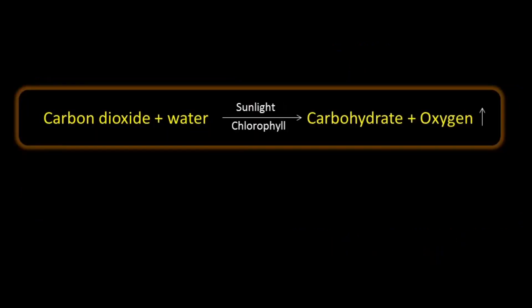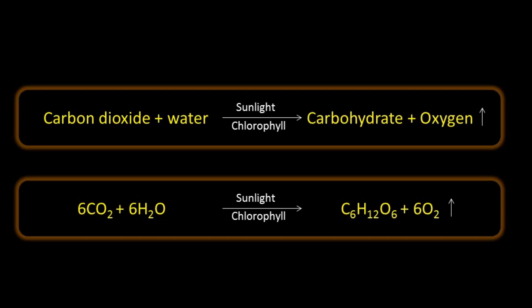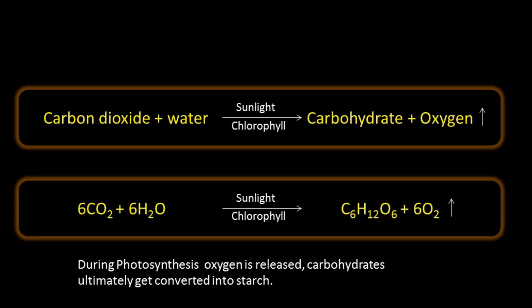The chemical equation: carbon dioxide and water combine and convert into carbohydrates, and in this process oxygen is released. The molecular formula for carbon dioxide is CO₂, water is H₂O, and the carbohydrate produced is C₆H₁₂O₆ — a simple form of carbohydrate known as glucose — and O₂ is the oxygen released. During photosynthesis, oxygen is released and carbohydrates ultimately get converted into starch.